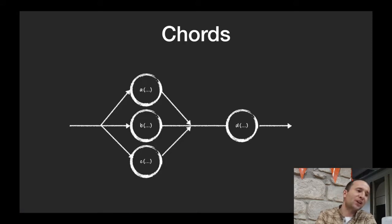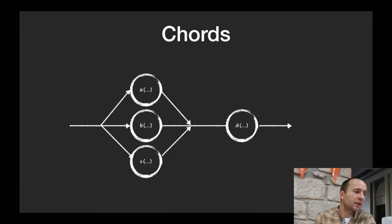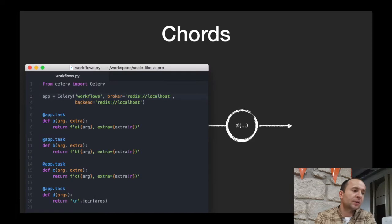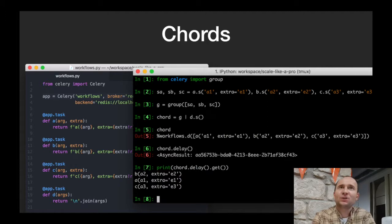The next thing is chords — a mixture of groups and chains. It's a group chained with a callback task. You create a group and pipe it to another task, which automatically turns it into a chord. You run `chord.delay()` and get chord results. It's a useful construct in Celery, though the majority of asynchronous queue work is as simple as putting tasks to the queue and forgetting about the results.